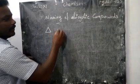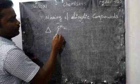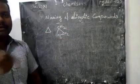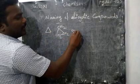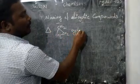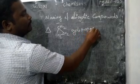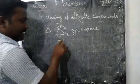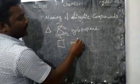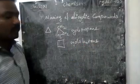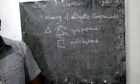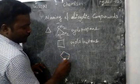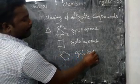Cyclopropane means at every corner we have CH₂. This triangle structure is a 3-carbon cyclic ring, so it is called cyclopropane. Each corner represents one carbon. Then if you have a 5-member ring, that is cyclopentane. And this 3-carbon structure is called cyclopropane.